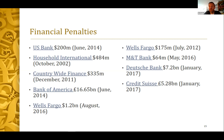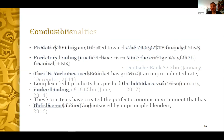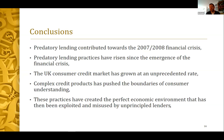Part of the difficulty with deferred prosecution agreements is that they're merely contracts: the lender admits wrongdoing, pays a massive fine and some compensation to consumers, changes their corporate governance structures, and carries on operating as normal. The best example of a DPA not being effective is HSBC with the Department of Justice in 2012, where the bank was convicted of facilitating money laundering for Mexican drug cartels and breaching UN sanctions for terrorism financing. No one from the bank was ever prosecuted.